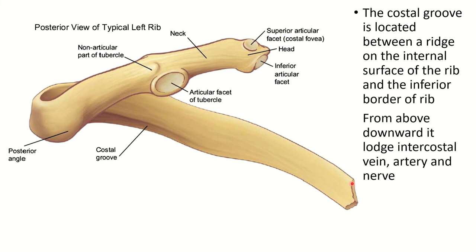This is the posterior end, this is the anterior end, and this is the shaft of the typical rib. This is the internal surface of the rib. There is a ridge present in the internal surface, and this is the lower border. The costal groove is situated in between the ridge and the inferior border. It is a depressed area containing, from above downward, the intercostal vein, artery, and nerve. So the lower border is related with the intercostal nerve.